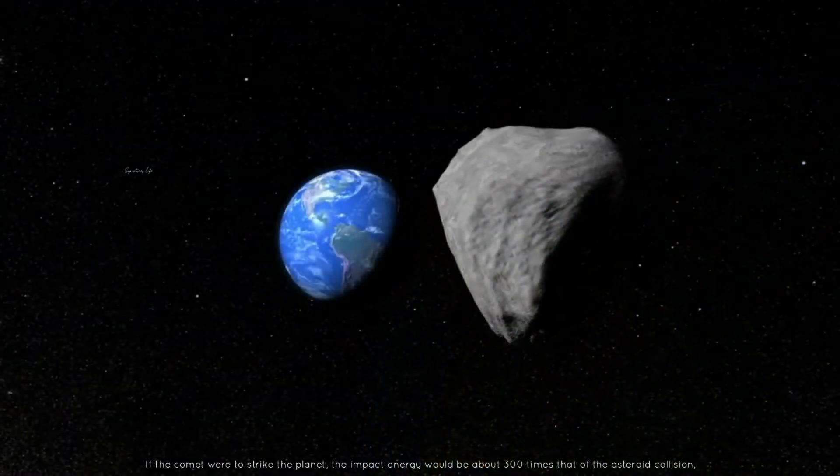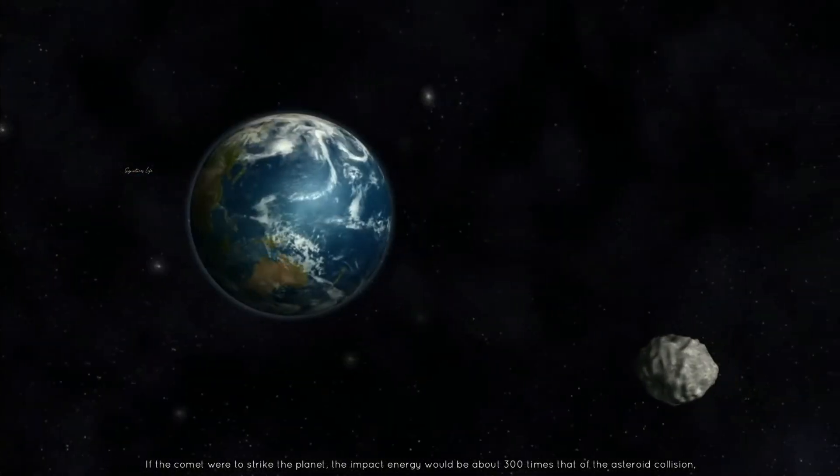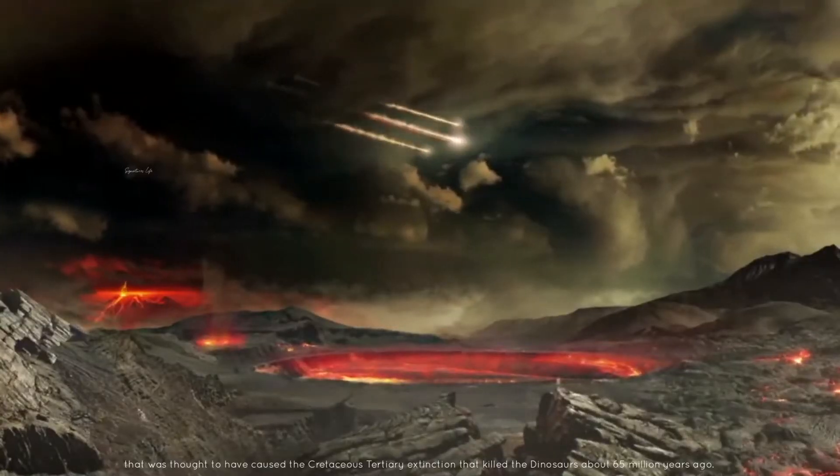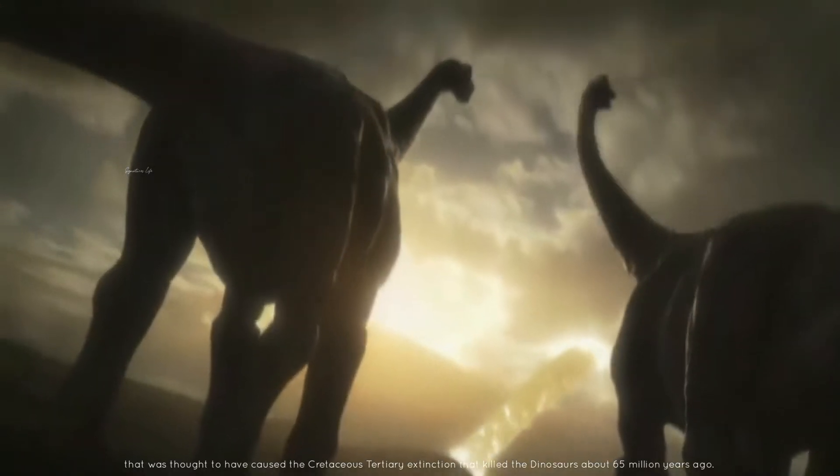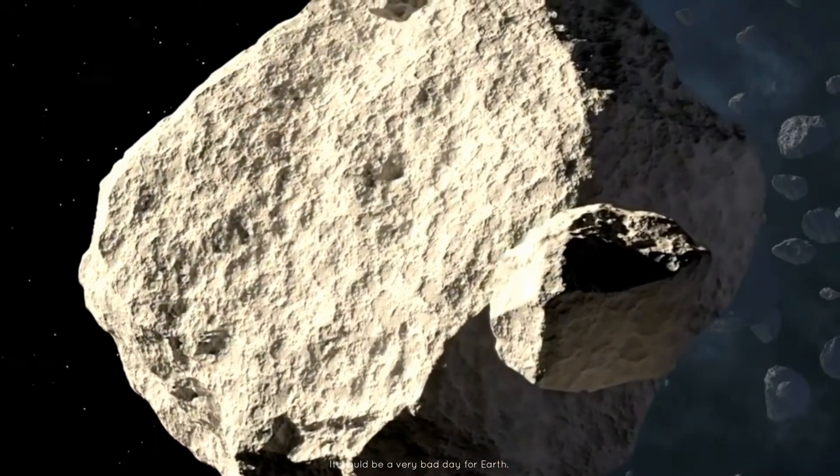If the comet were to strike the planet, the impact energy would be about 300 times that of the asteroid collision that was thought to have caused the Cretaceous-Tertiary extinction that killed the dinosaurs about 65 million years ago. It would be a very bad day for Earth.